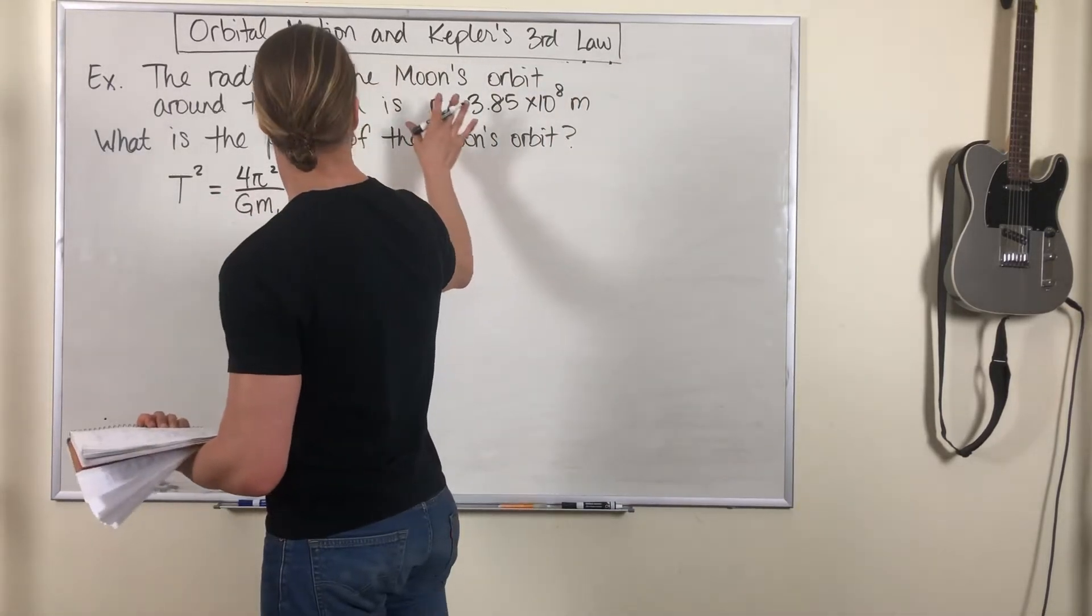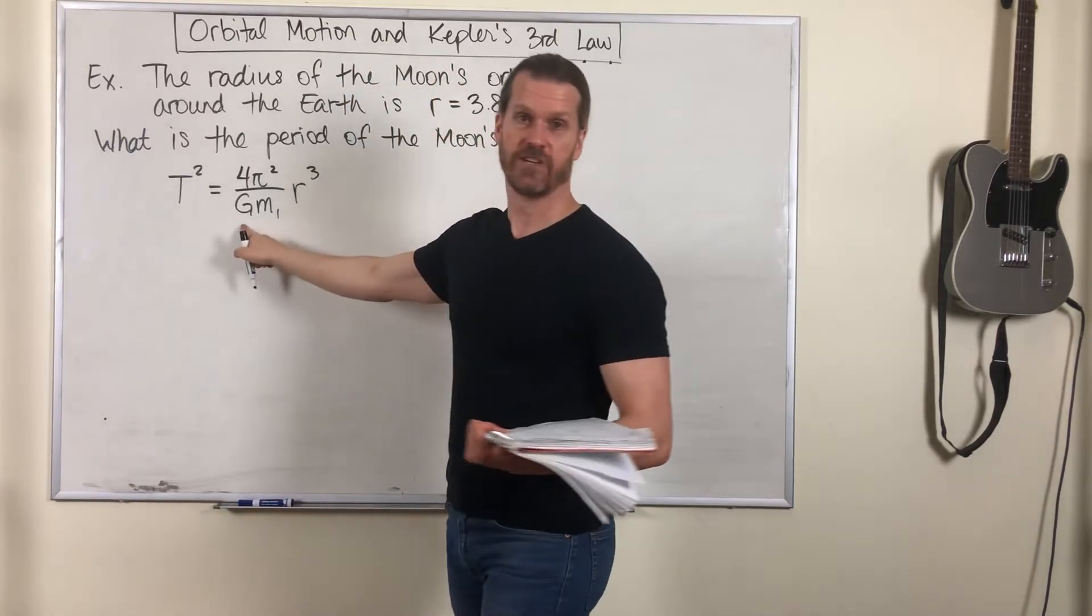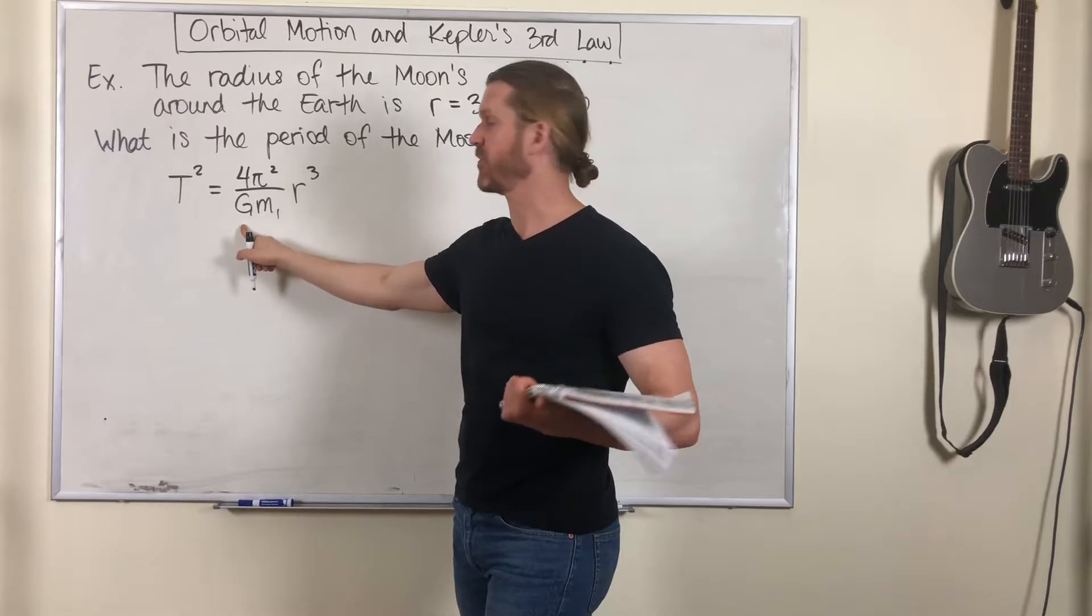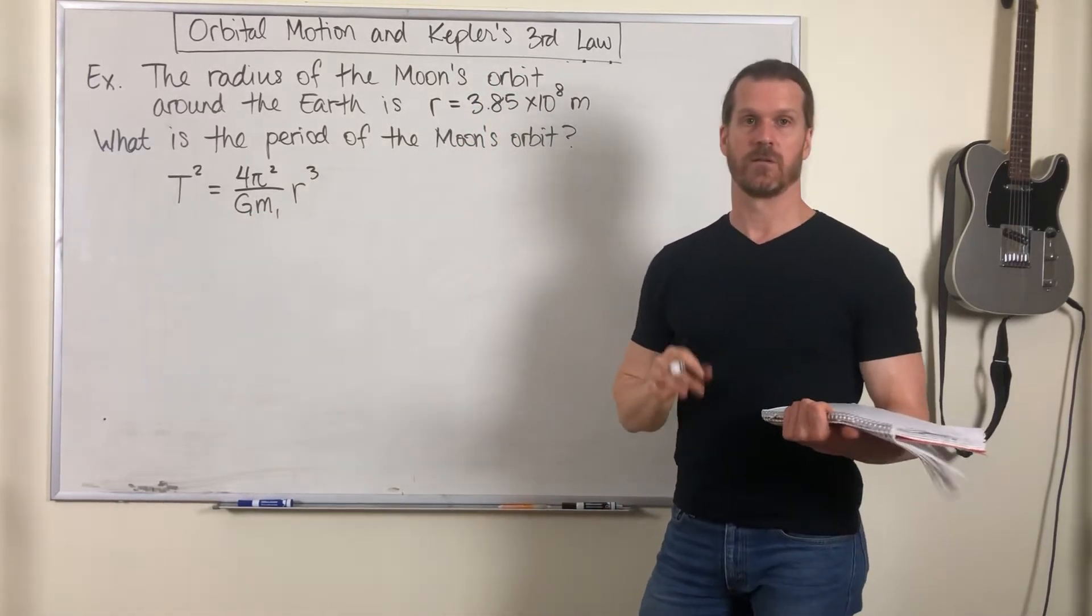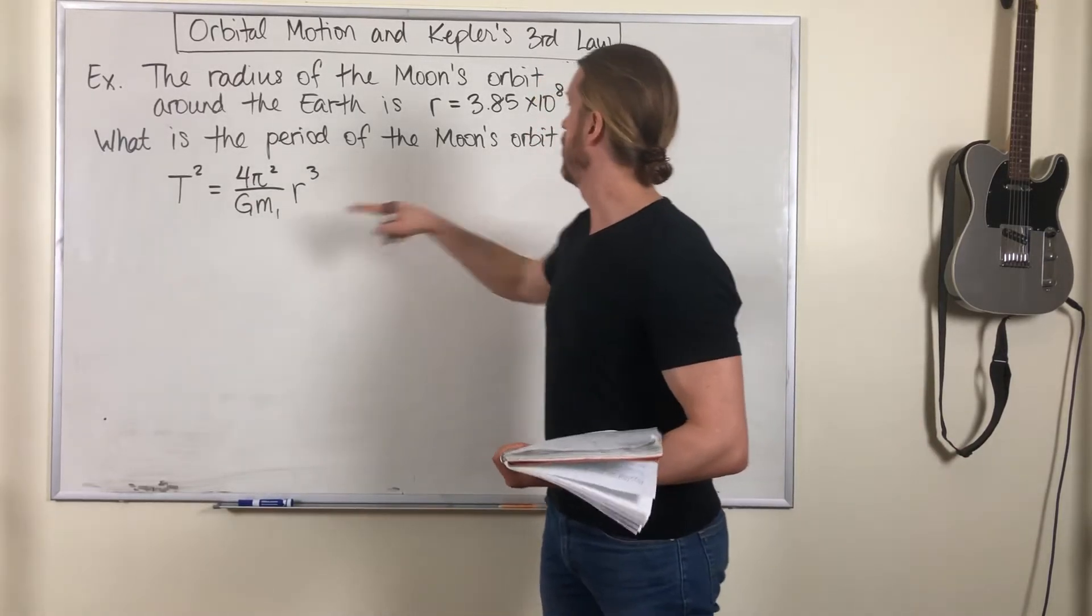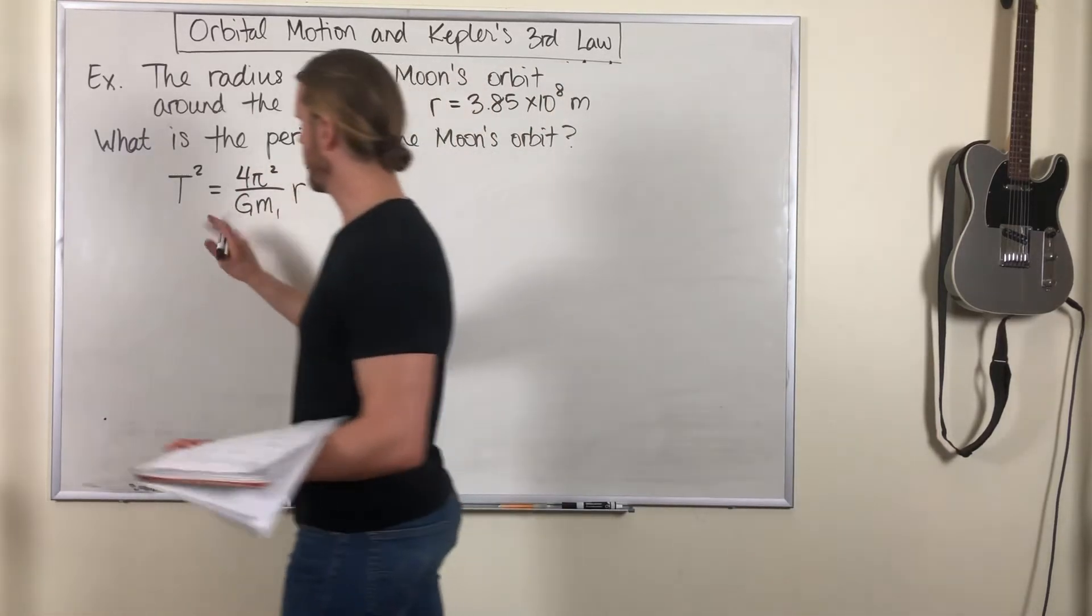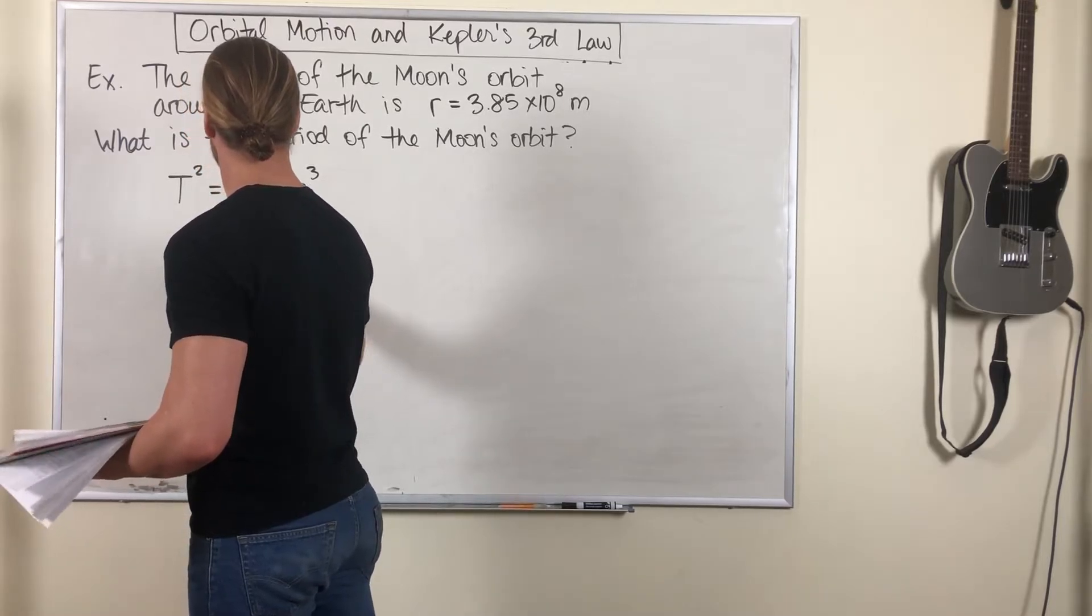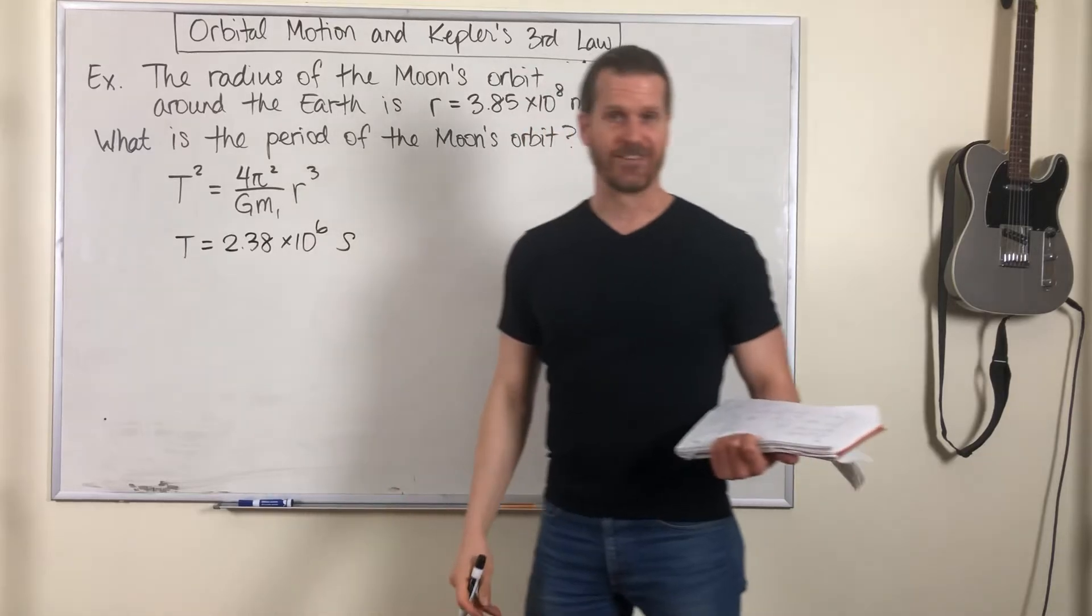So if we plug in the numbers that were given: G is 6.67 times 10 to the minus 11 newtons meters squared per kilogram squared, m1 is the mass of the earth, 5.972 times 10 to the 24 kilograms, r is this orbital radius. So we plug all that in, take the square root, you can try that at home. You get 2.38 times 10 to the 6 seconds.